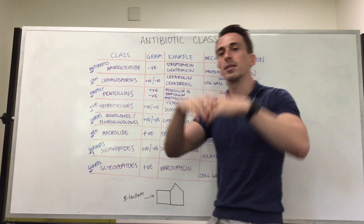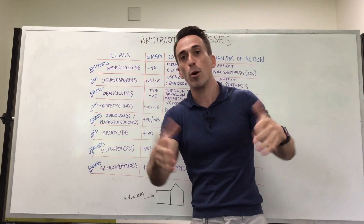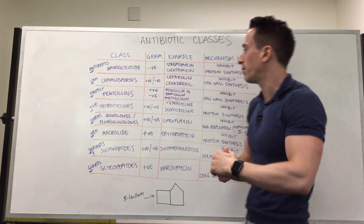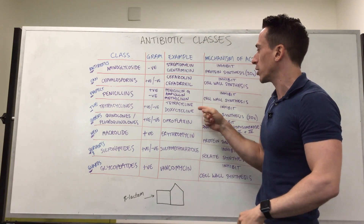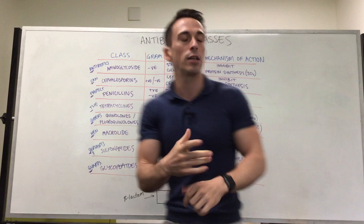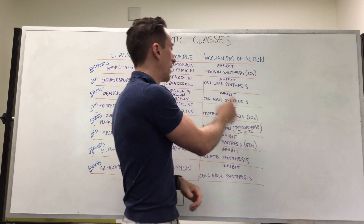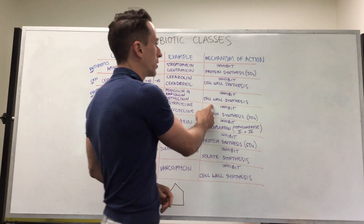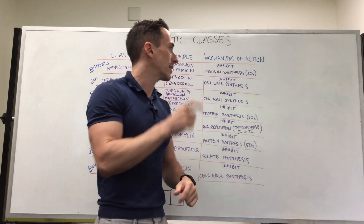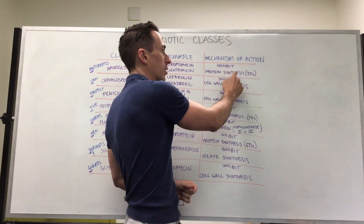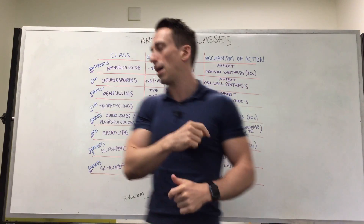T stands for tetracyclines, which kill both gram-positive and gram-negative bacteria. Examples include tetracycline and doxycycline. They work by inhibiting protein synthesis at the 30S subunit, just like aminoglycosides.